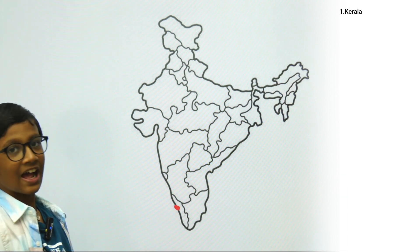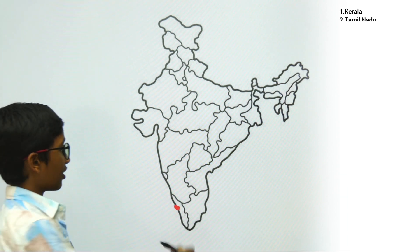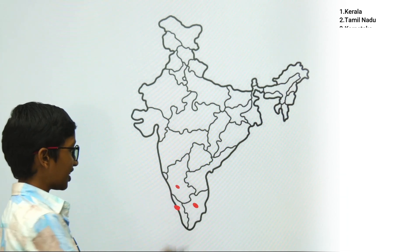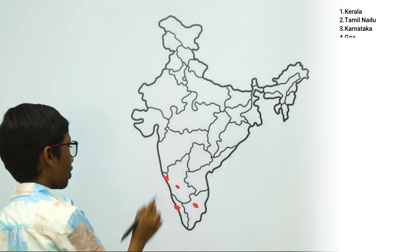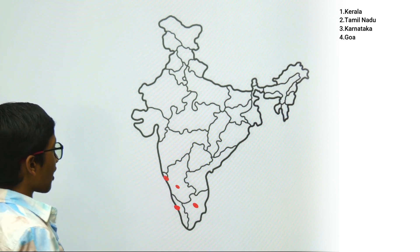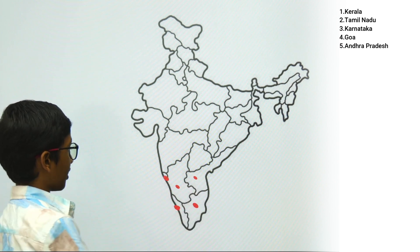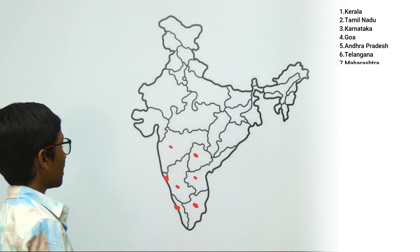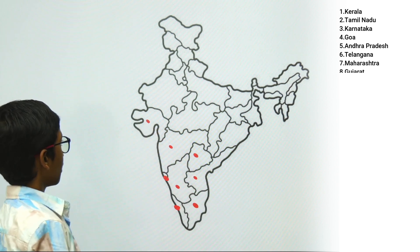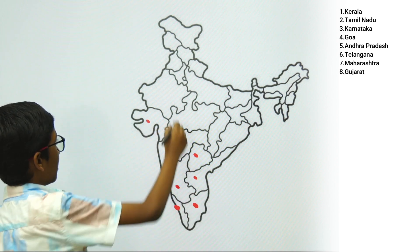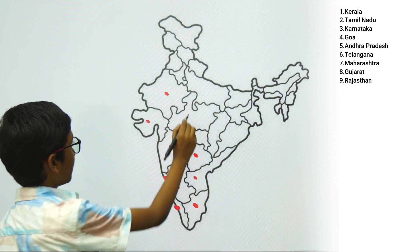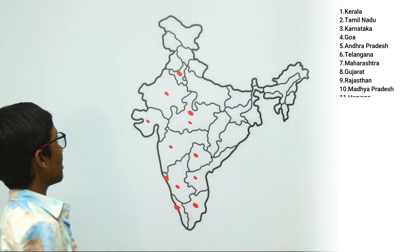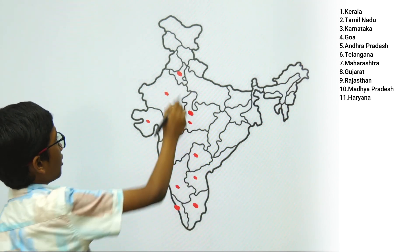1. Kerala, 2. Tamil Nadu, 3. Karnataka, 4. Goa, 5. Andhra Pradesh, 6. Telangana, 7. Maharashtra, 8. Gujarat, 9. Rajasthan, 10. Madhya Pradesh, 11. Haryana, 12. Punjab.